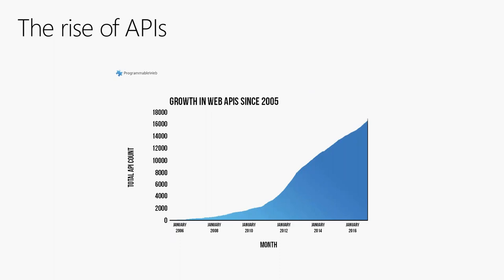Before we go into API management, let's look at APIs first. Why do we want to manage these APIs? Looking at the growth of APIs from the programmable web — these track public APIs available up to 2017 or so — APIs have become really important and keep on growing. This doesn't even take into account private APIs, of which there will be a lot more.